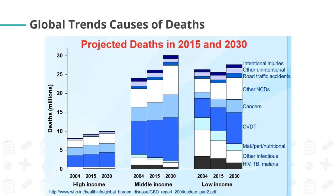This is a study made by the World Health Organization in 2004 projecting deaths in 2015 and 2030. As you can see in this graph, the most predominant cause is cardiovascular disease, followed by other NCDs.